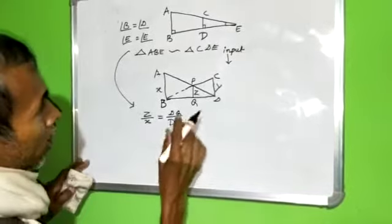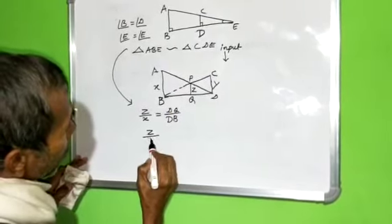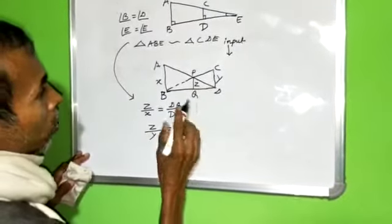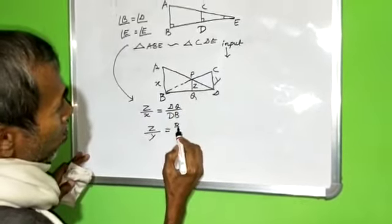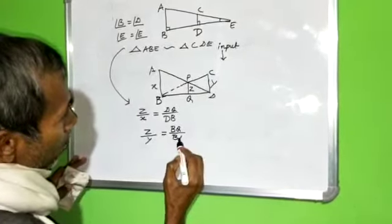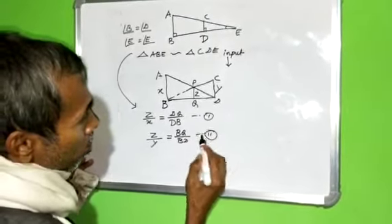Similarly, Z by Y, Z by Y equal to BQ by BD. This is equation one. This is equation two.